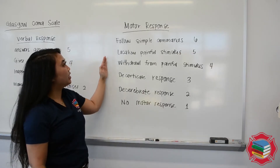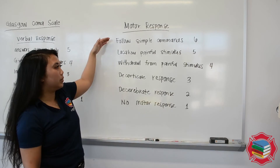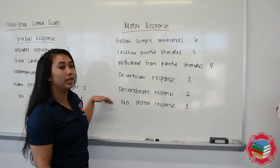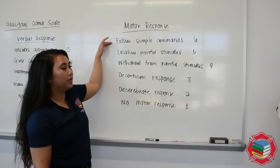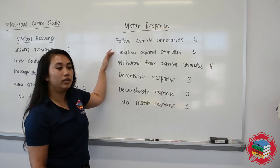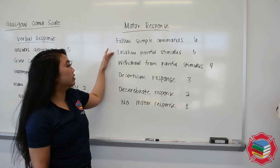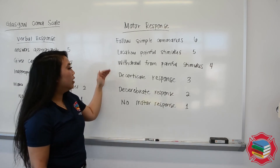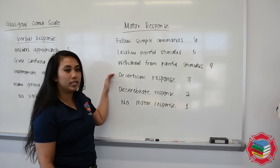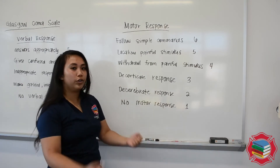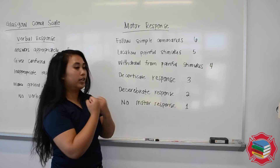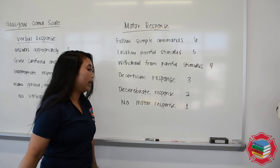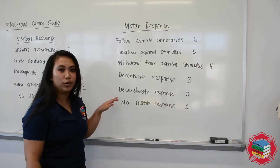Lastly, it's going to be the motor response. This one starts at 6 and goes down to 1. For 6, it's follow simple commands. Number 5 is localizes painful stimulus. Number 4 is withdraw from painful stimulus. Decorticate response is 3 — the arms go towards the core. Decerebrate response is 2 — arms go away. And 1 is no motor response.